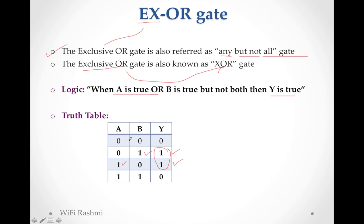An important observation: when you get the same inputs like 0 0 or 1 1, the final output will be 0. This is the key property of XOR gate - 'any but not all'. When both inputs are the same, output is 0; when they differ, output is 1.